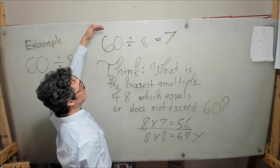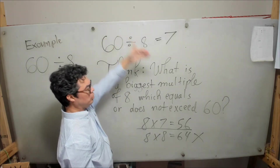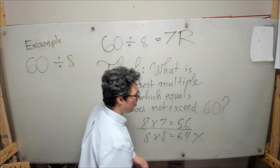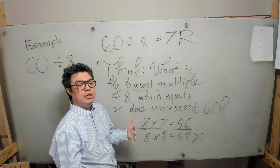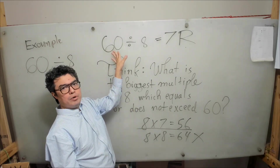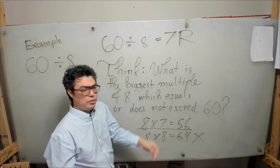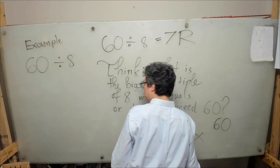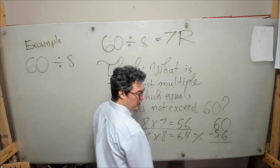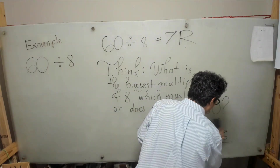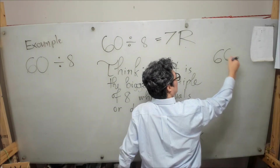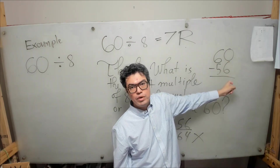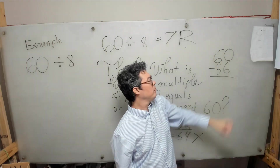60 is bigger than 56, so that means we're going to have a remainder. Let's write an R here to represent that. Now we need to find out what the remainder is. The remainder is the amount by which our given number exceeds that biggest multiple — how much does 60 exceed 56? We determine that by subtracting: 60 minus 56.